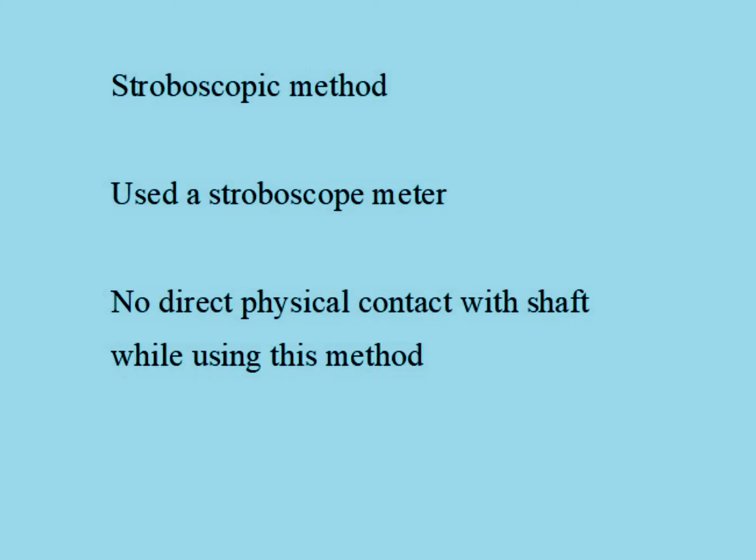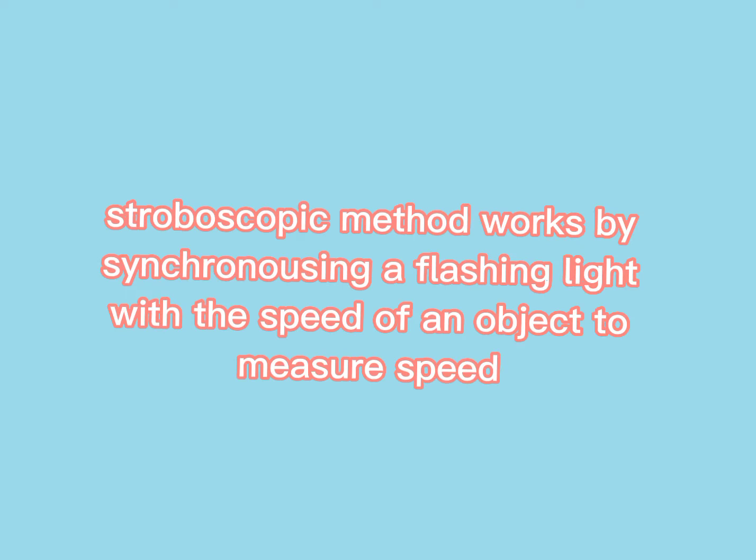For our practical, we have used a stroboscope meter, which is straightforward, portable and manually operated, used to measure periodic or rotating motion. There is no physical contact with the shaft while using this method, and the purpose of the stroboscope is to make the rotating shaft motionless by synchronizing and flashing light with it.